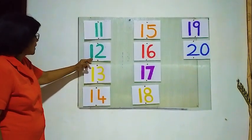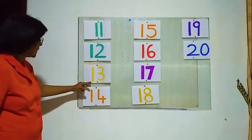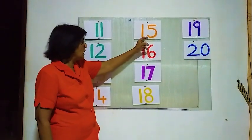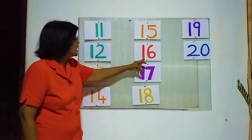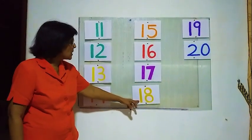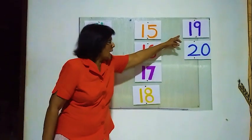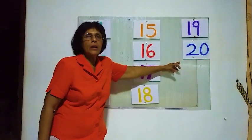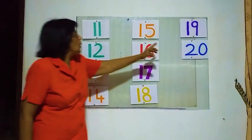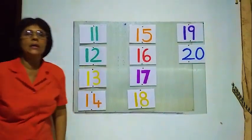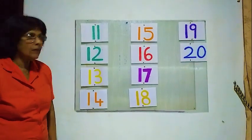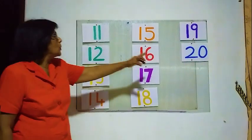Number 12, number 13, number 14, number 15, number 16, number 17, number 18, number 19, number 20 — 11 to 20. Earlier we learned 1 to 10, today we are learning 11 to 20.